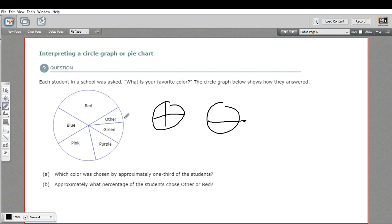Okay, so we've thought about the circle graph for a minute. Let's see if we can answer the questions. A says, which color was chosen by approximately one third of the students? Well, that's easy. We've been talking about it. That's red. That's about one third.